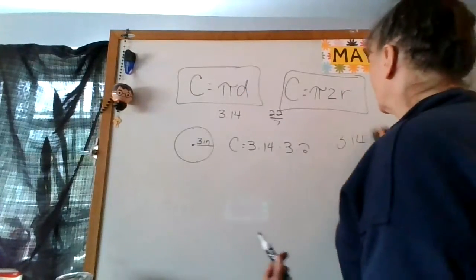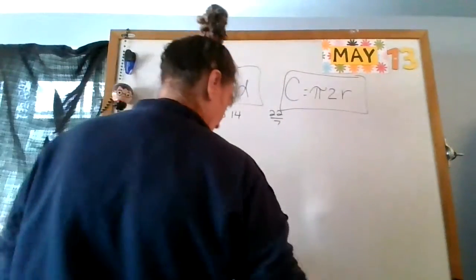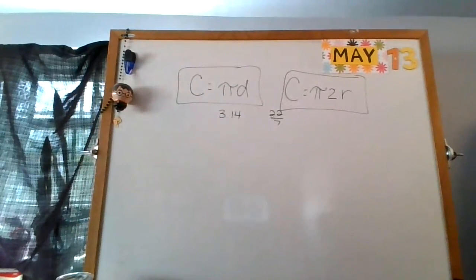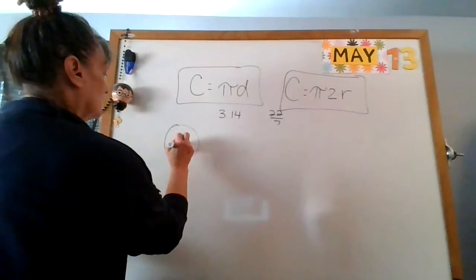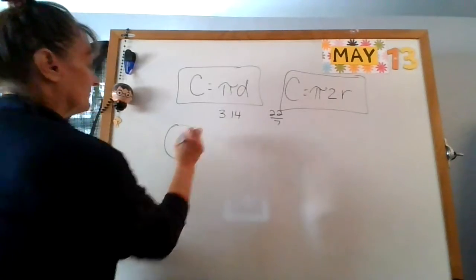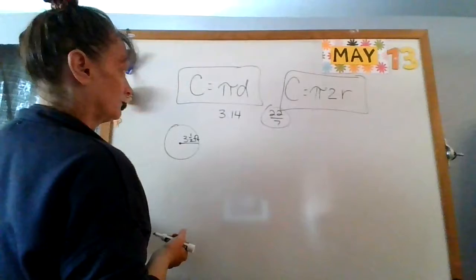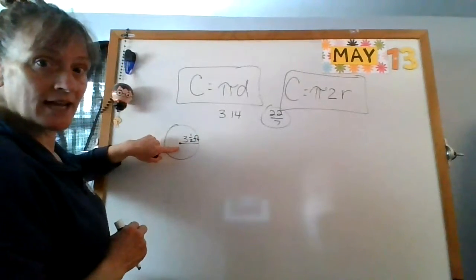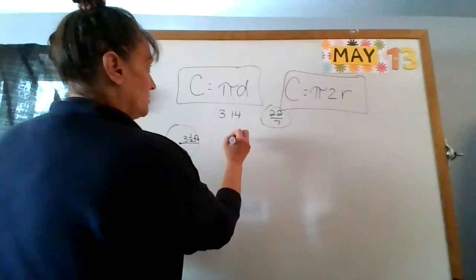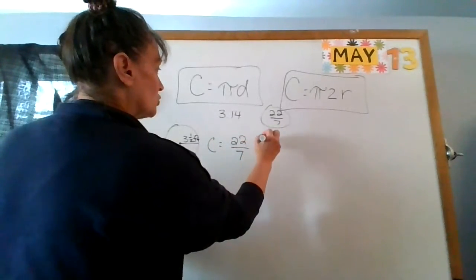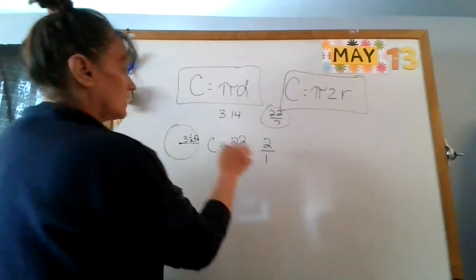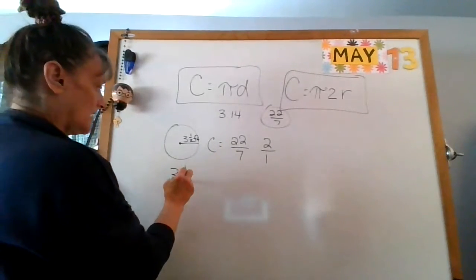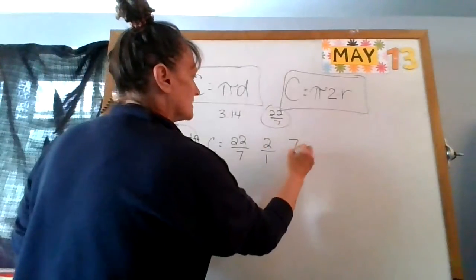That was my radius one. The other one was the diameter. Let's say they give me 22 sevenths and they say figure out what this would be. They give me 3 and a half feet and they say this time use 22 sevenths. So instead of pi, I'll do 22 sevenths. Is this radius or diameter? Radius. So I'm going to do 22 sevenths times 2, times 3 and a half. I'm going to do 2 over 1 because it's a fraction, times 7 halves.